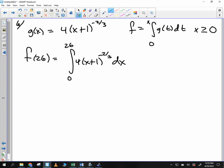So we need to find an antiderivative, right? And the antiderivative in this situation is 12 times x plus 1 raised to the one-third power, evaluated 26 and 0. Were you able to come up with the 12 x plus 1 to the one-third?